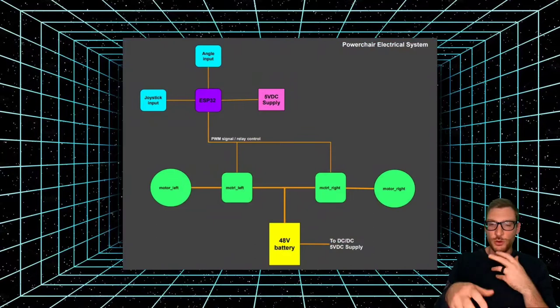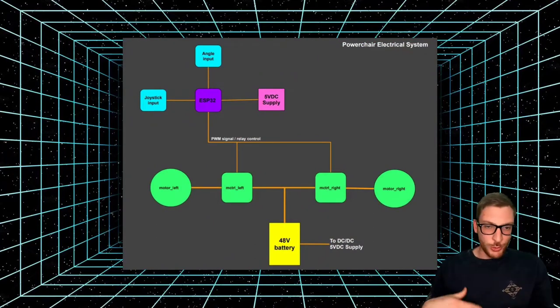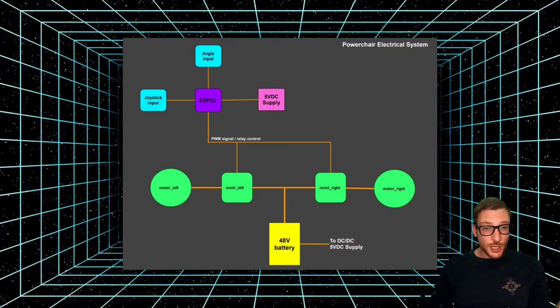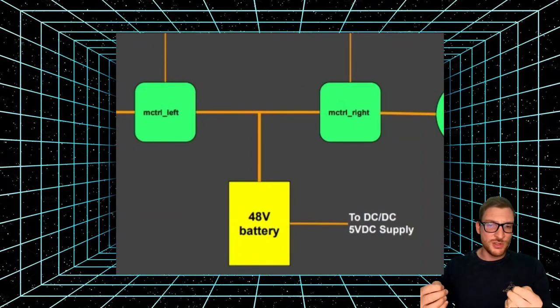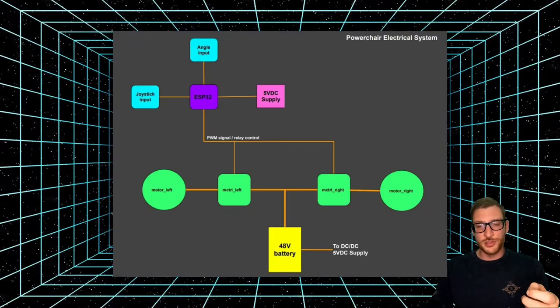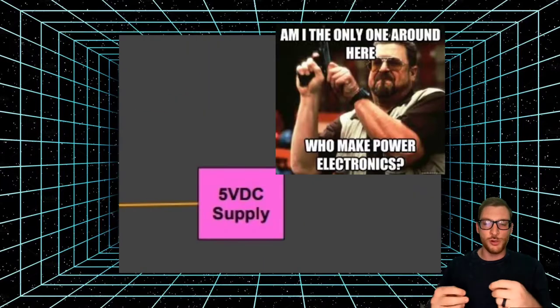The goal here is to keep the system as cheap as possible while making it rugged enough to withstand continuous use. The overall design architecture looks like this. Let's go over each of the parts of this diagram. All right, what are we looking at here? Let's look at this diagram. So we've got a custom 48 volt battery pack and that's going to power the motor controllers and feed the DC to DC converter that steps the voltage down to 5 volts DC to power all the electronic circuits.